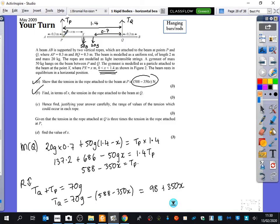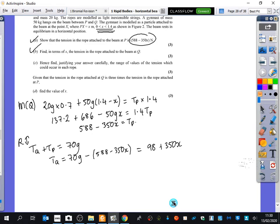So at this side is where x is equal to 0, and at this side is where x is equal to 1.4. So all you really need to do is we would first of all say that x equals 0, so TP equals 588. And when x equals 1.4, TP equals 588 minus 350 times 1.4, which is 98. So the range is 98, but it can't include,